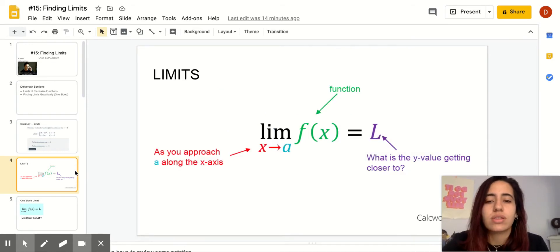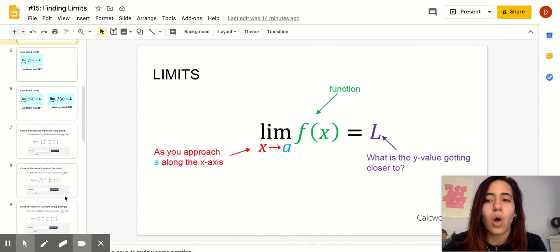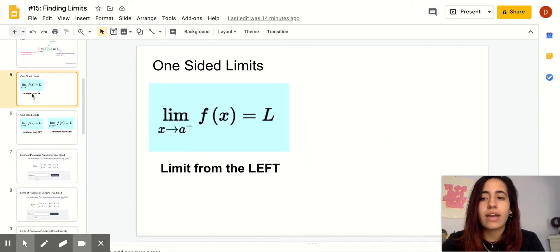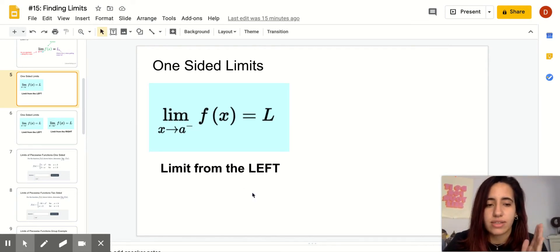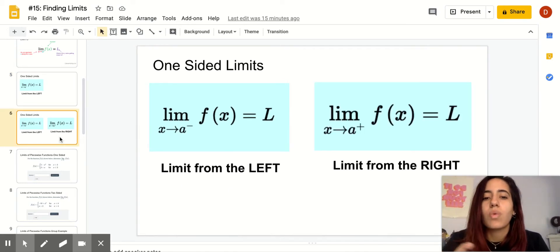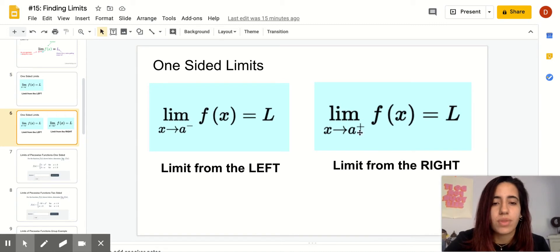So before we go over some examples, this is an example of a limit notation. As x approaches a for this particular function, what is the y getting closer to? So this is an overall limit, you could call this a two-sided limit. So that implies that there are also one-sided limits. So this is the same format, the same notation. The only new thing is that there's a little negative sign to the top right of a. That just tells you that I'm looking for the limit from the left hand side, not from the right. And then same thing with your right hand side. So your limit from the right is when there's a little positive next to your number on the right side, not on the left side. So don't confuse that with integers, negative and positive integers. These are negative and positive directions.